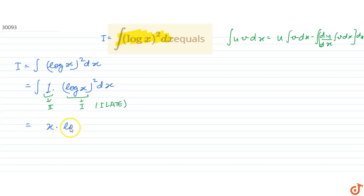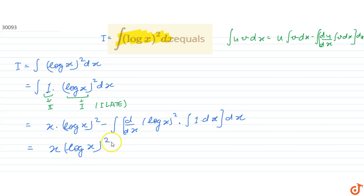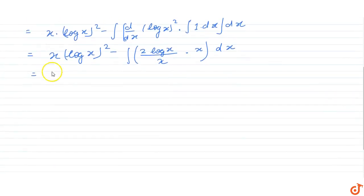Using this rule, we get x·(log x)² minus the integral of d/dx of (log x)² times the integral of 1 dx, then dx. This equals x·(log x)² minus — since d/dx of (log x)² equals 2·log x · (1/x), and the integral of 1 dx is x — we get x·(log x)² minus 2 times the integral of log x dx.